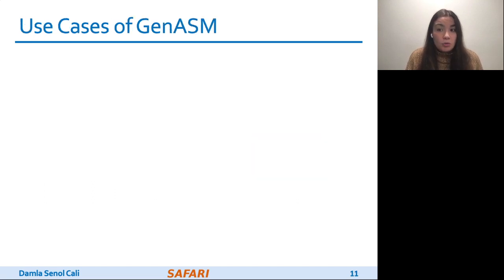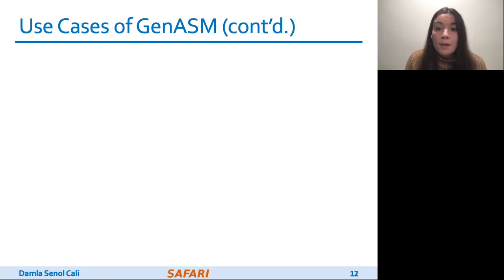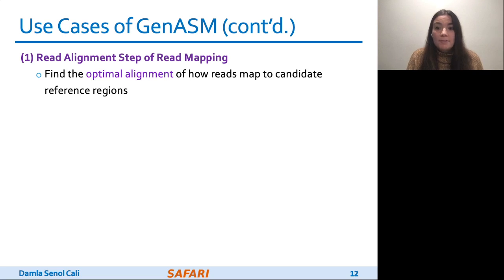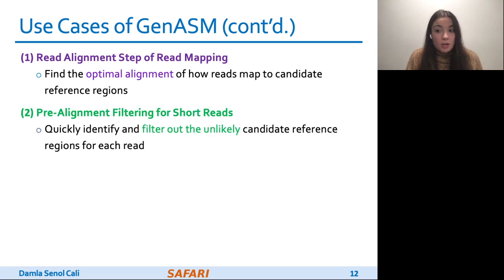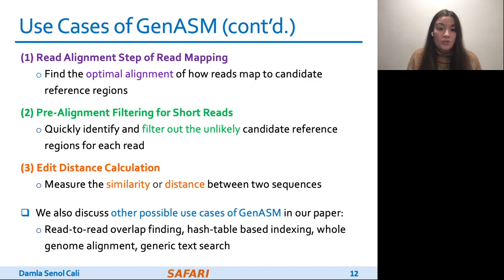GENASM is flexible and can be used for a number of use cases. In this work, we evaluate three of them in detail, and two of them are from the read-mapping pipeline: pre-alignment filtering and read alignment. Read alignment is the most time-consuming step of read mapping, where we align each read to all of its candidate reference regions and find the optimal alignment. In pre-alignment filtering for short reads, we aim to quickly identify and filter out unlikely candidate reference regions by approximating the edit distance and filtering out if it is above a threshold. Our third use case is edit distance calculation, which is one of the fundamental operations in genomics that measures the similarity or distance between two given sequences. In our paper, we also briefly discuss several other use cases such as generic text search.